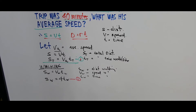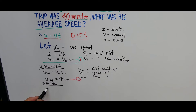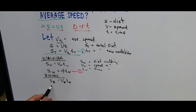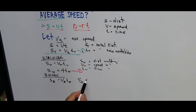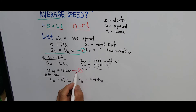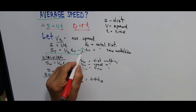Now let's consider biking. Distance biking S_B equals speed biking times time biking. Substituting the value: distance biking B equals 24 miles per hour times time biking T_B. So S_B equals 24 times T_B. That is equation 3.